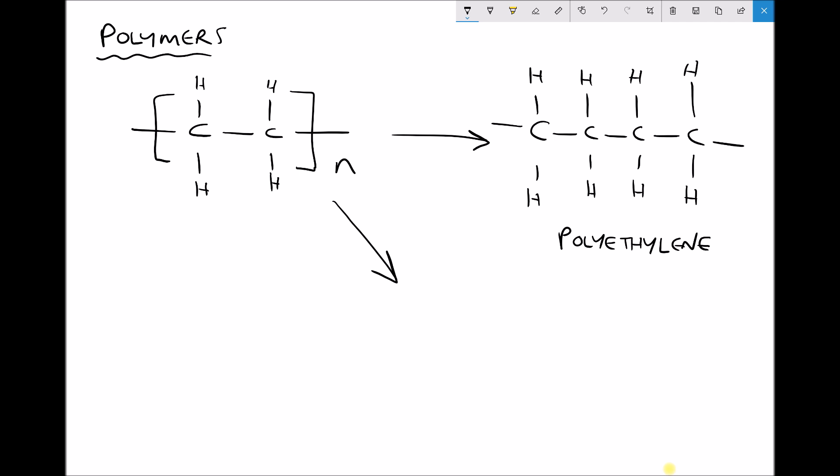Now when we have a very long linear backbone as drawn there, what we are actually referring to is something called high density polyethylene. And high density polyethylene tends to be produced at low pressures.